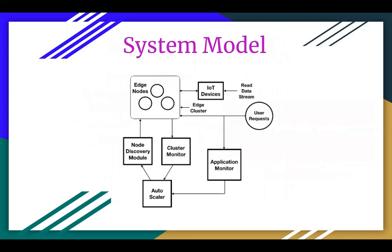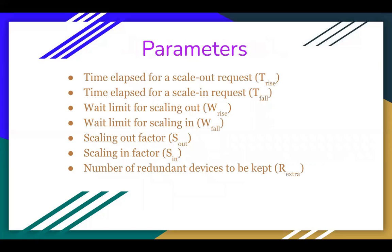This is the system model that we have considered. The cluster monitor and the application monitor give all essential information about the number of requests being successfully responded to and the average resource utilization of the available devices. Based on this information, AMAS determines the deviation from the optimal requirement and takes the necessary steps of modification. Apart from the basic parameters of request rate and cluster state, AMAS uses these as the vital parameters.